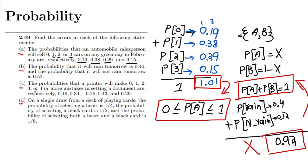Similarly in part C, the probabilities that a printer will make 0, 1, 2, 3, or 4 or more mistakes in setting a document are respectively 0.19, 0.34, minus 0.25, 0.43, and 0.29.